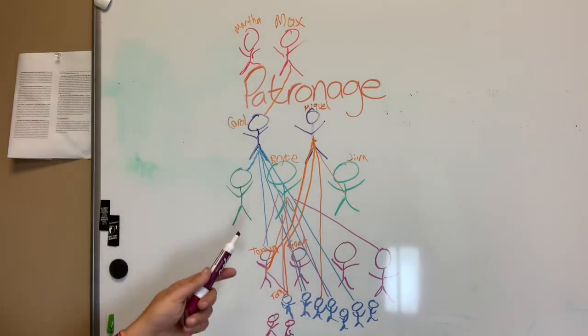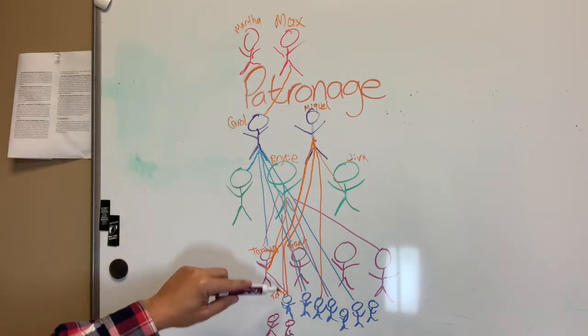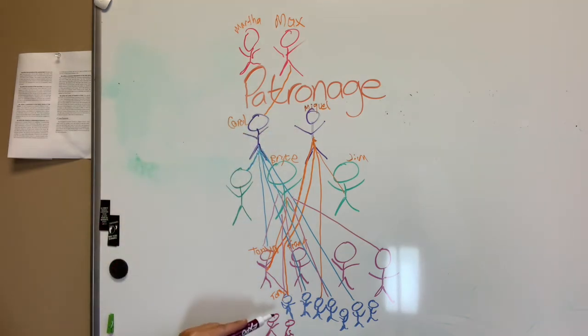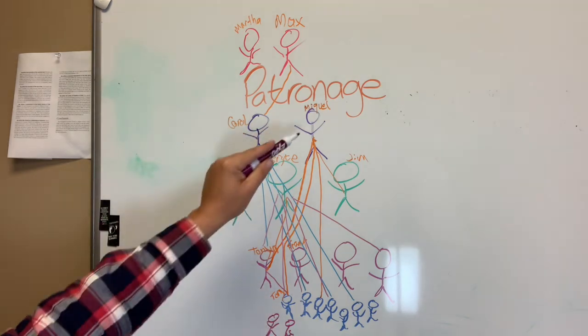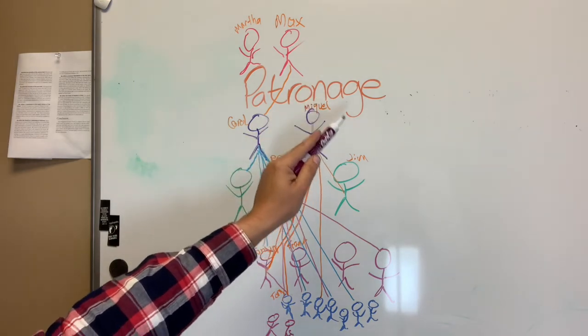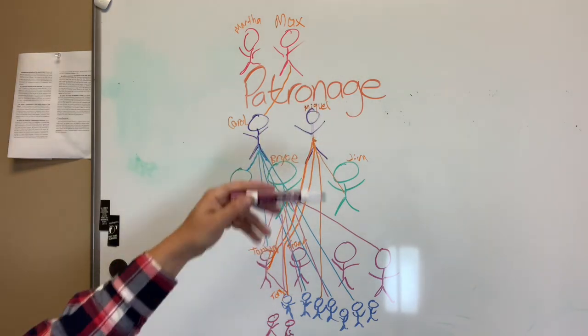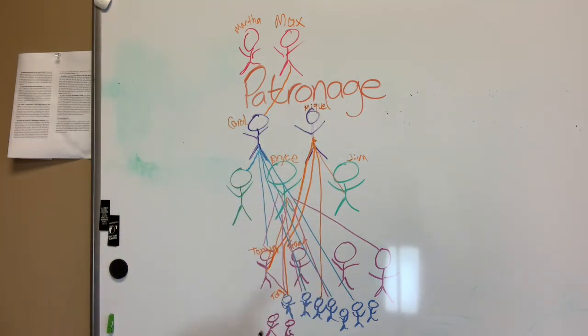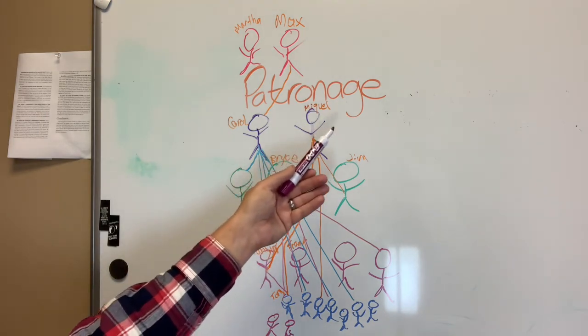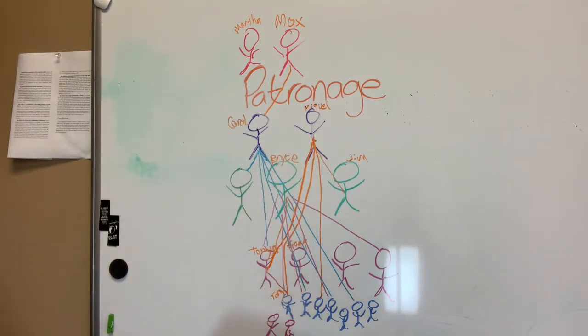An interesting aspect of the system is that it's primarily generational, meaning that if Tony was a client of the patron Miguel, by default, Tony's children would become clients of Miguel. And this can go on for generations and generations. Miguel's heir would be the patron to Tony's heirs on and on and on, as long as the system could be maintained. And so you can see that very quickly, within a few generations, Miguel's family has suddenly gathered an army of clients.